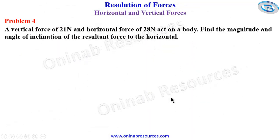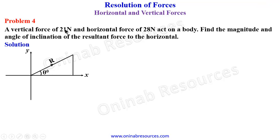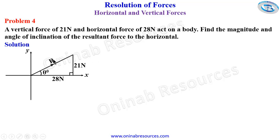We then go to problem 4. If a vertical force of 21 newtons and a horizontal force of 28 newtons act on a body, find the magnitude and angle of inclination of the resultant force to the horizontal. We represent this on the Cartesian plane with the vertical component of 21 newtons and the horizontal component of 28 newtons, and let the angle of inclination to the horizontal be theta. We still have a right-angled triangle.